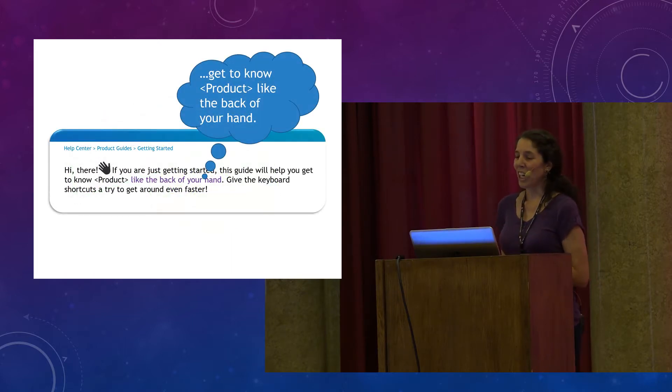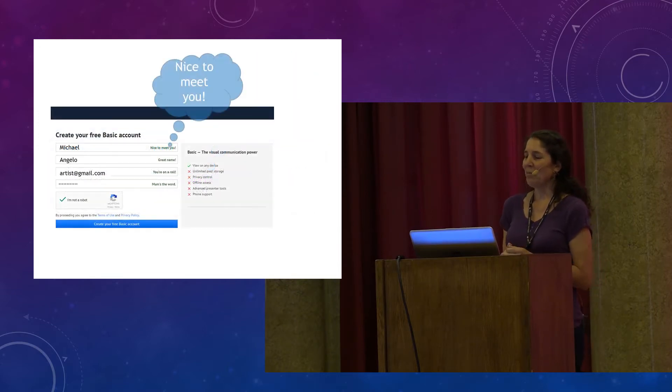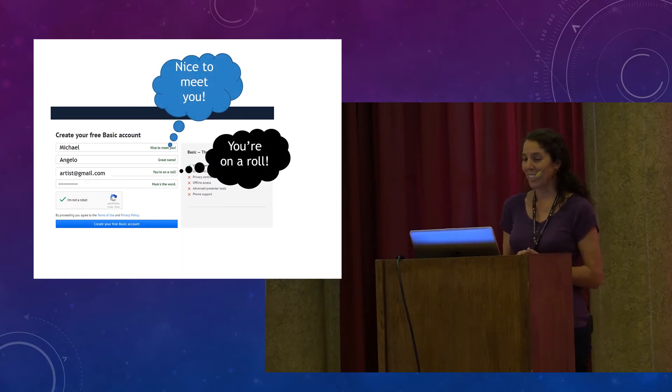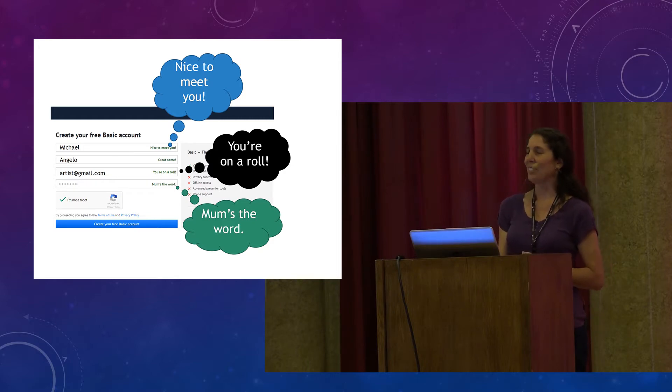In another messaging app, we read, "This guide will help you get to know product, like the back of your hand," as well as a waving hand emoji in the content. And on an account creation form, the system responds with polite, supportive phrases when you type your information. "Your name," "Nice to meet you." "You're on a roll." And "Your password," "Mum's the word." Again, intended to create empathy and give the user a sense that the system has personality.